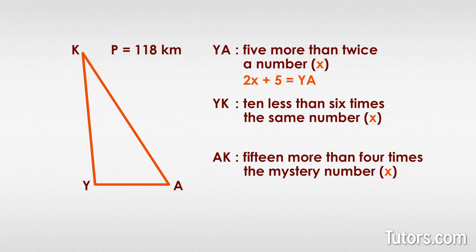Ten less than six times the same number becomes 6X minus 10 equals YK. Fifteen more than four times the mystery number becomes 4X plus 15 equals AK.